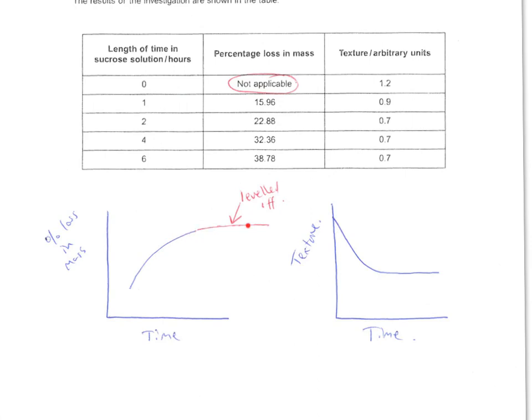Then in red, you could extrapolate the curve, extrapolate the curve until it levels off. And the time at which it levels off would be the time that all the water has been lost from the strawberry, so it's not going to lose any more mass.